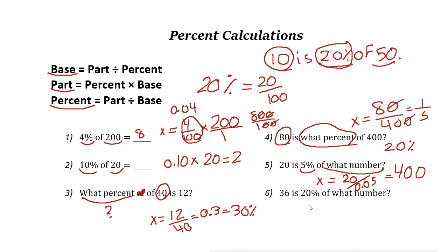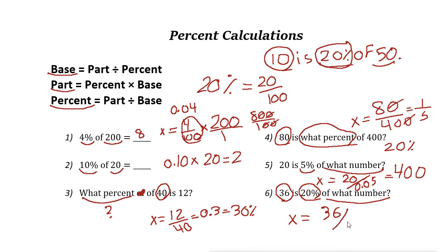Last example: 36 is 20% of what number? Here 36 is the part, 20% is the percent, and the base is missing. Let the base be X. Divide part by percent: 36 divided by 0.20 equals 180. So 36 is 20% of 180.